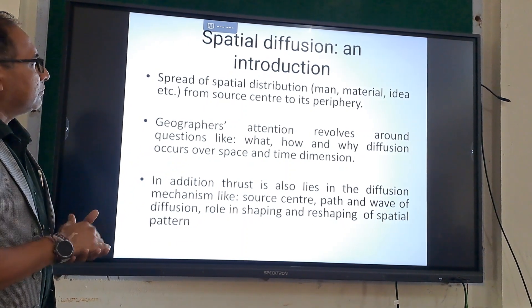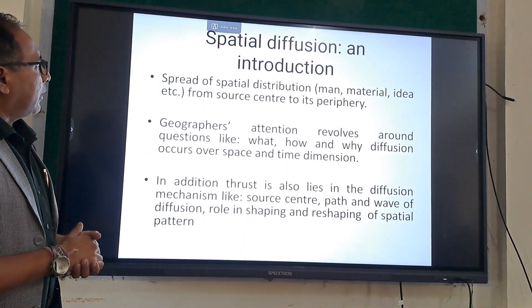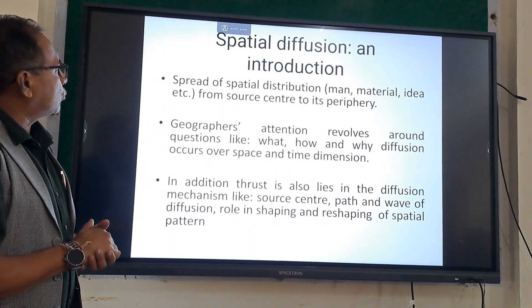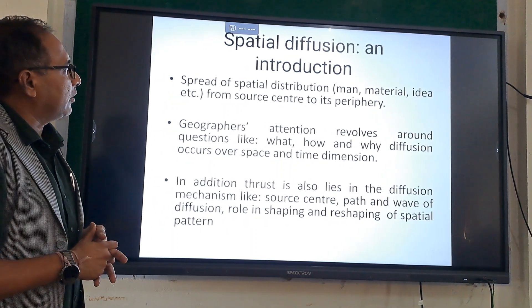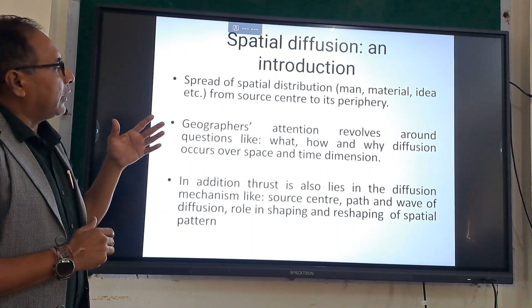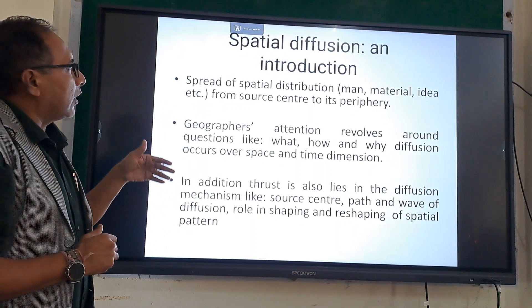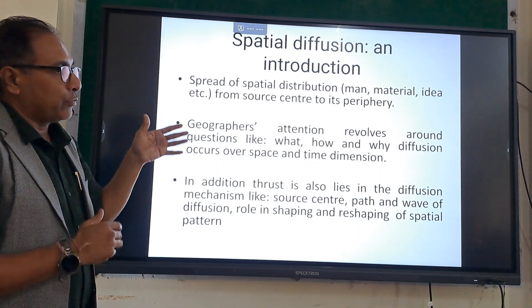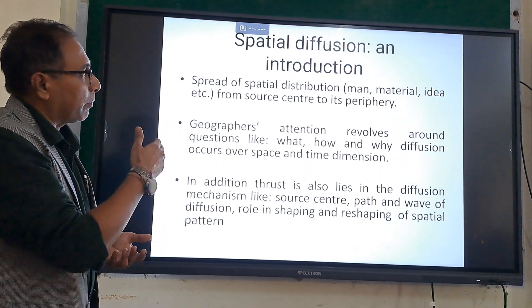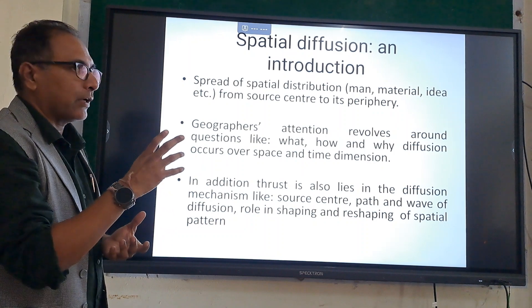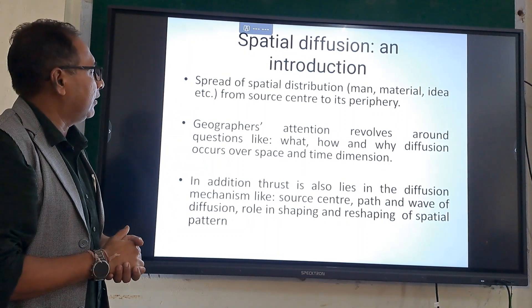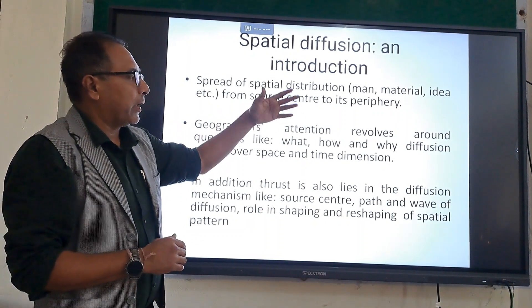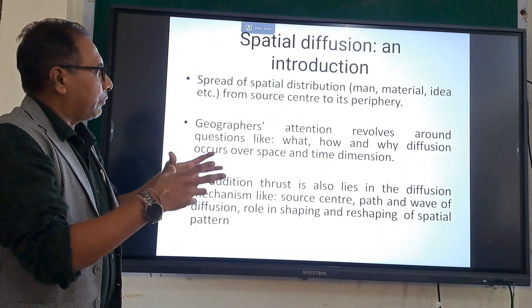As you can see from the slide, diffusion as a terminology refers to a state of spatial distribution — which may involve man, material, or even a virtual idea. When we talk about man and material, this is a physical parameter which is diffused from one place to another, from a particular source centre to its periphery. That is what diffusion is all about.